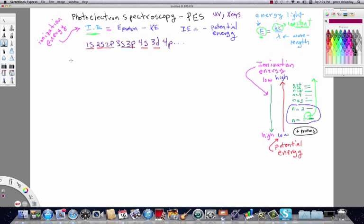So the 3D subshell is actually lower in energy than the 4S shell in scandium that has two electrons.